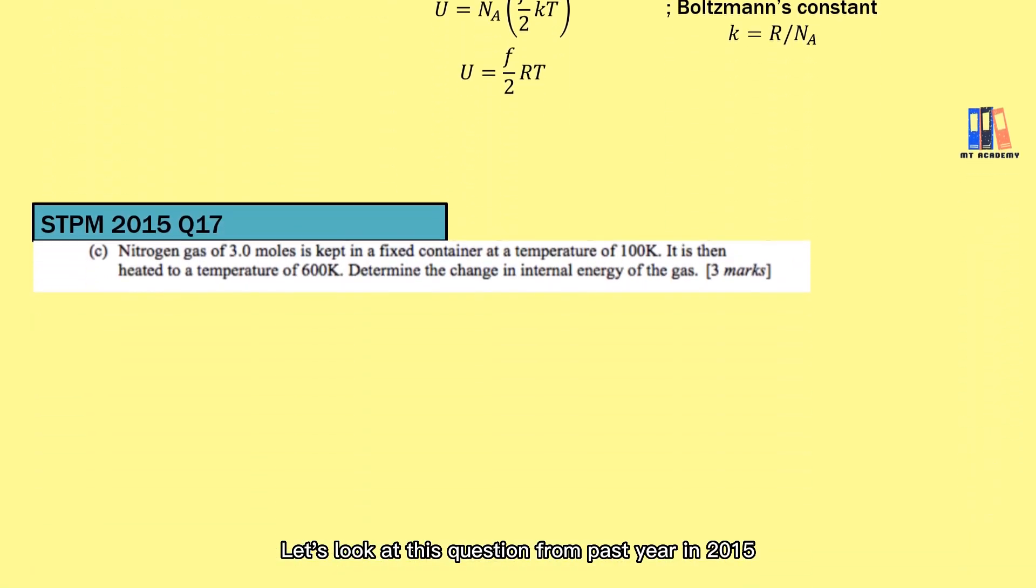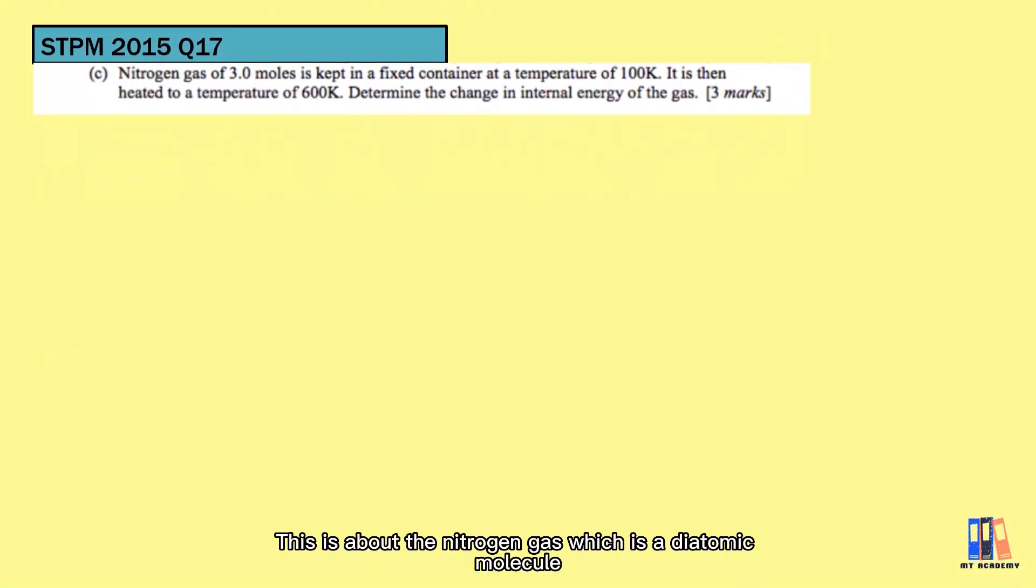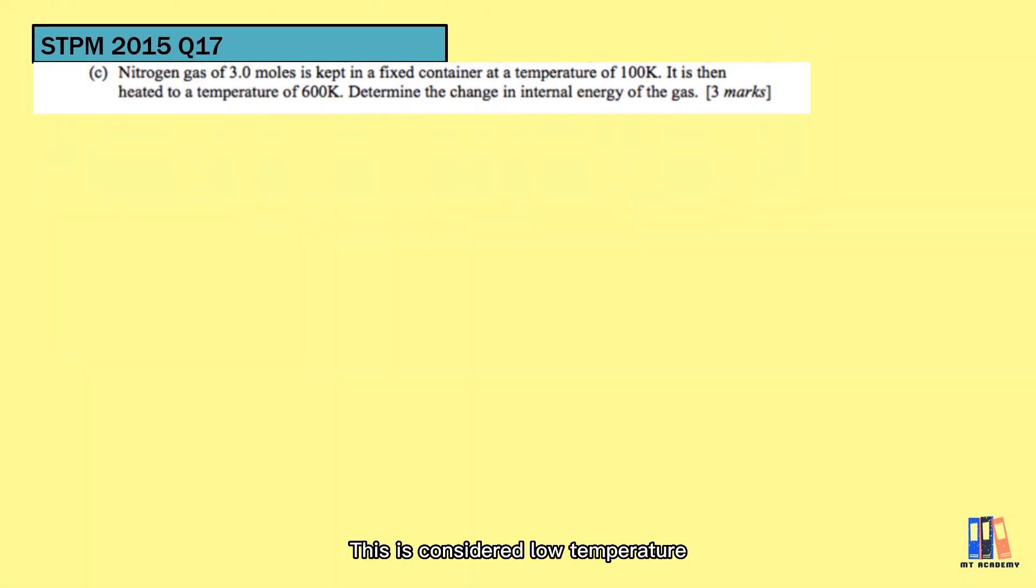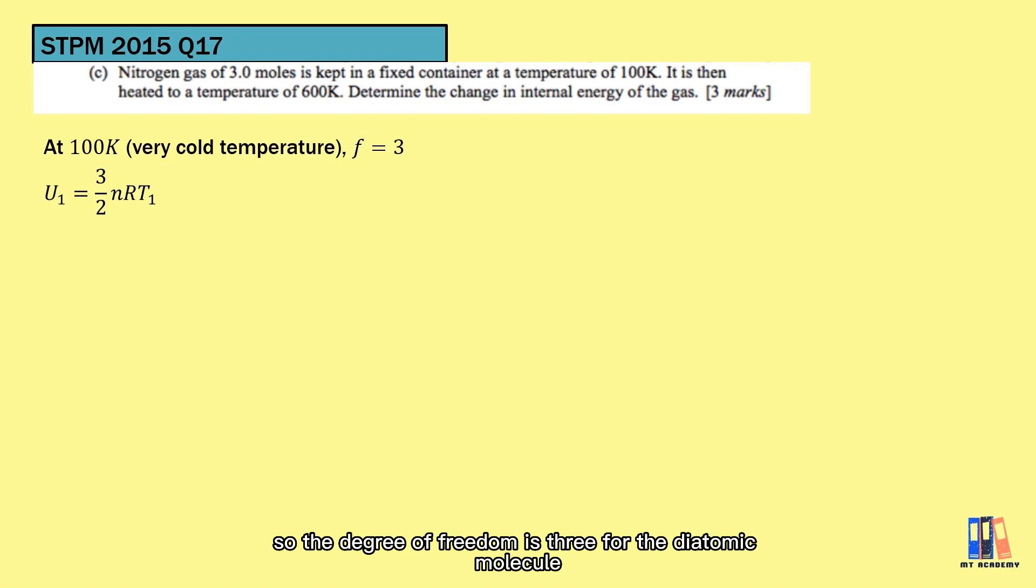Let's look at this question from Parsi in 2015. This is about the nitrogen gas which is a diatomic molecule. It is kept in a fixed container at a temperature of 100 Kelvin or negative 173 degrees Celsius. So this is considered low temperature, so the degree of freedom is 3 for the diatomic molecule in a very cold temperature. So the internal energy would be equal to 3 over 2 nRT. Notice that we are given with the number of moles, so if we check back the formula, we should use the formula with the constant R.